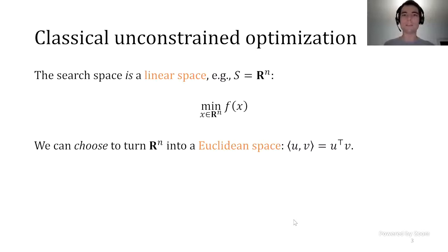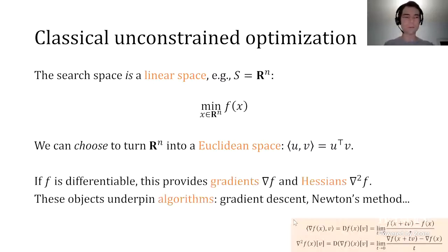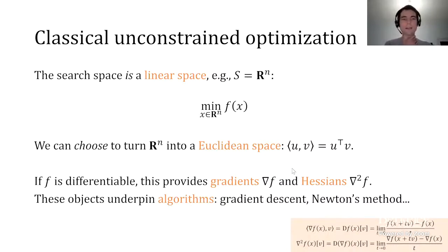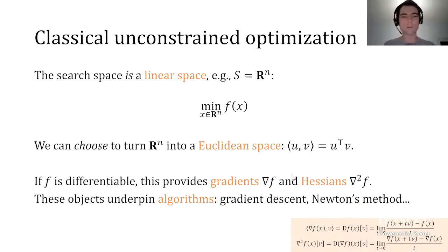Namely, make it a Euclidean space, give it an inner product—for example, just U transpose V, the usual. The reason we might decide to do so is because if we do, and if the cost function is sufficiently differentiable, then this affords the very useful concepts of the gradient of a function and the Hessian of a function. You have reminders at the bottom right of how those things are defined. Once we have those concepts, we can use them for algorithmic purposes and define things like gradient descent and Newton's method.